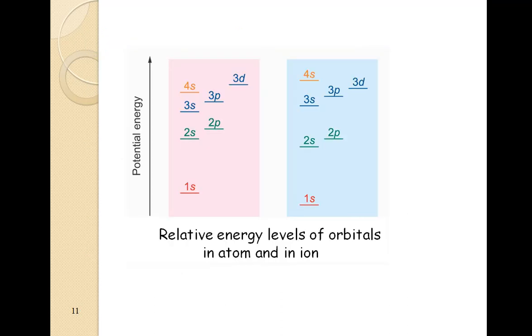Let us take the example of copper. For copper, this is the order of energy. 1s is lowest energy. What we write? 1S2, 2S2, 2P6, 3S2, 3P6, 4S1, 3D10. This means 4s is of lower energy as compared to 3d.